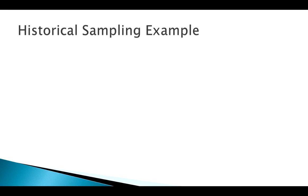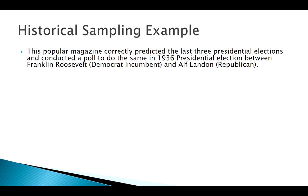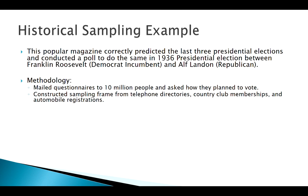Welcome back. Let's look at a historical example to tie all these ideas together about sampling. There was a magazine back in 1936 that correctly predicted elections a few times in a row, and then they came to the 1936 election, mailed surveys to 10 million people.